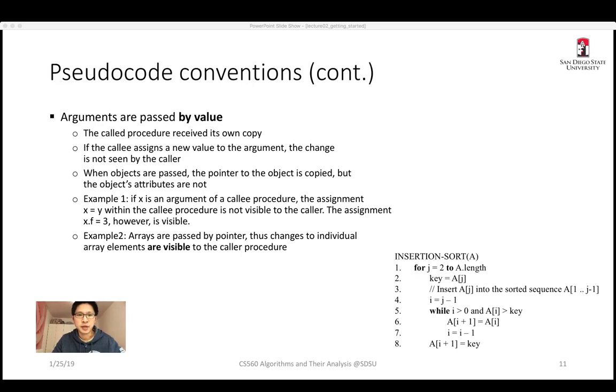Regarding argument passing: arguments to a procedure are passed by value, so the callee gets its own copy and changes are not seen by the caller. However, when objects (like arrays) are passed, only the pointer is copied — so assignments to individual array elements within the callee are visible to the caller, enabling in-place sorting as in insertion sort.